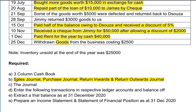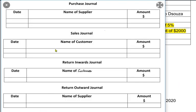In a sales journal we always record all sales made on credit. In a purchase journal we record purchases made on credit — whenever we buy stock goods or inventory on credit. Whenever credit customers return goods to us, we record it in a return inward journal, also known as a sales return journal. Whenever we return goods to a supplier, we record it in a return outward journal.